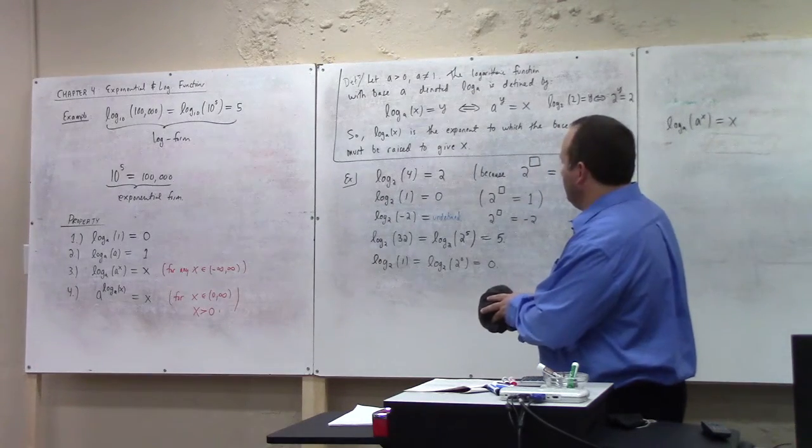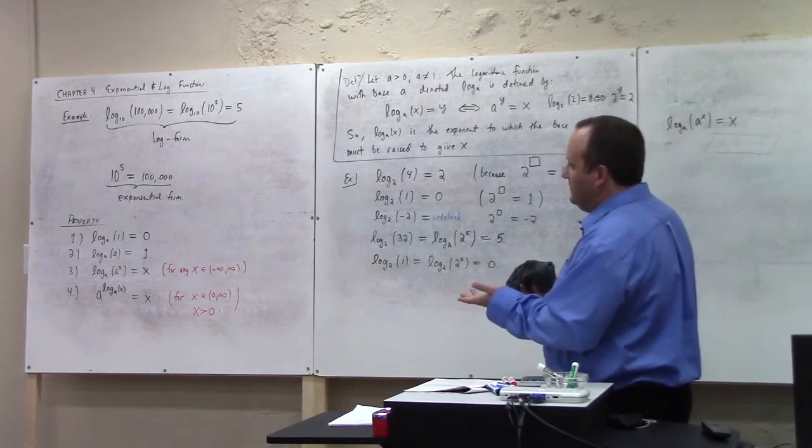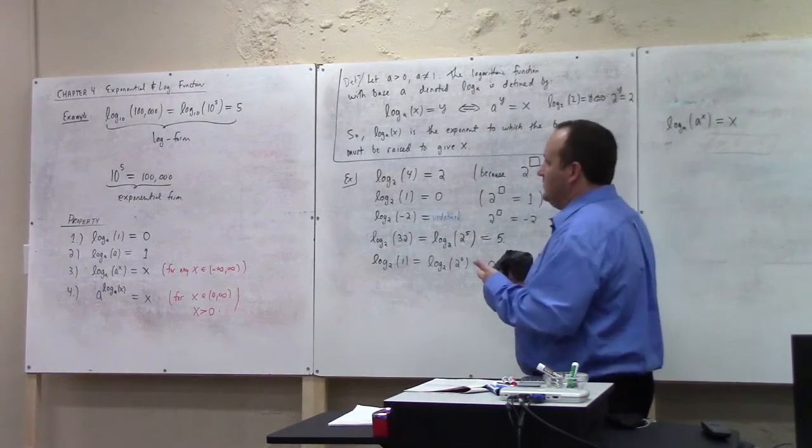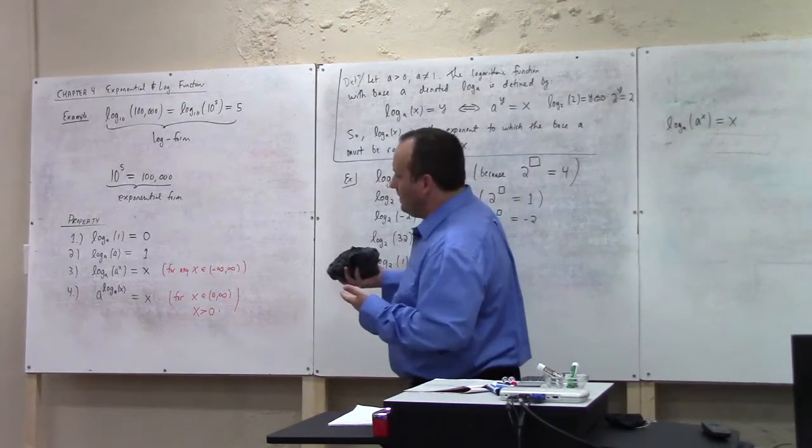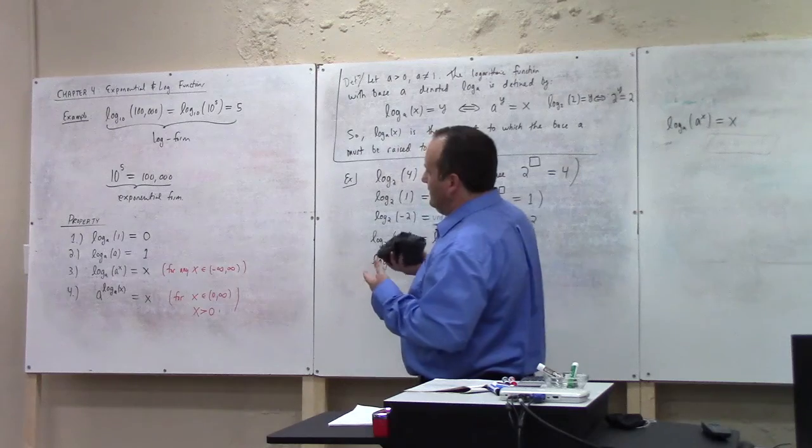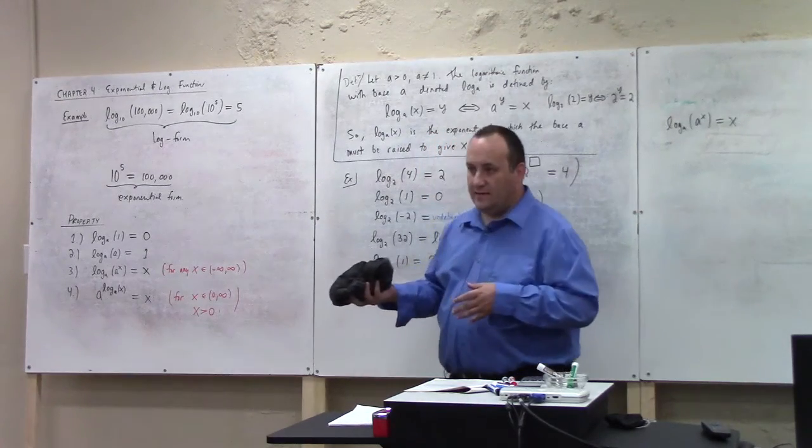So these are basic properties of logarithms and how you can calculate them. There is like a log base 10 button on your calculator, most likely.